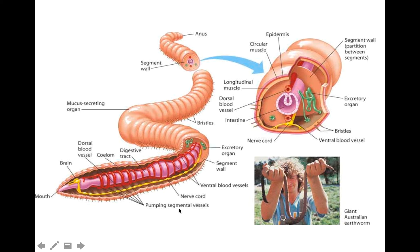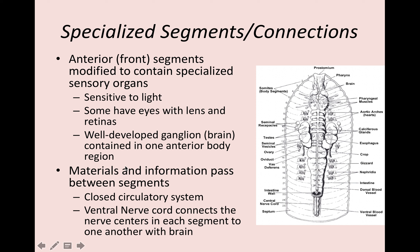Looking at the diagram — we have segmentation with septa in between each segment, and the bristles, the chaetae, down below. The anterior, or front, has most of the specialized organs. They are extremely sensitive to light; some species have eyes with lens and retinas. They have a well-developed ganglion, which is considered the brain. They also have a closed circulatory system and a ventral nerve cord that connects each segment to their brain.